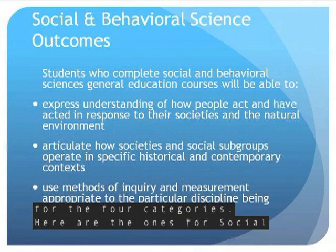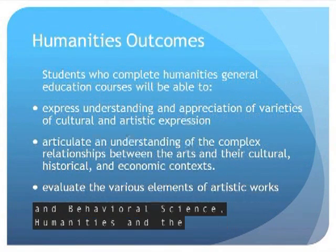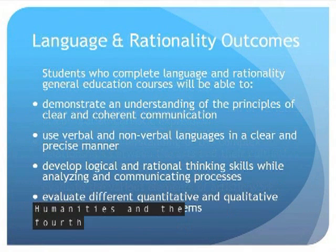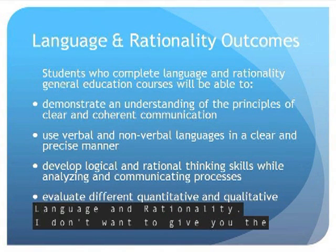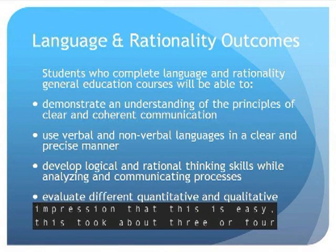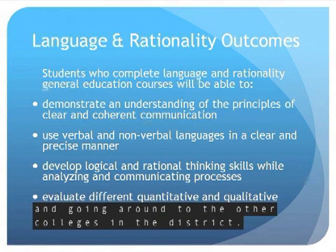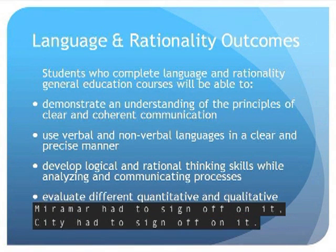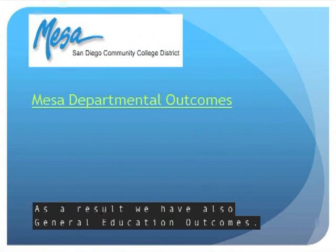Here are the general education outcomes for social and behavioral science, humanities, and the fourth category, language and rationality. I don't want to give you the impression that this was easy — this took about three or four months of wordsmithing, going around to the other colleges in the district. Miramar had to sign off on it, City had to sign off on it. But as a result, we also have general education outcomes.